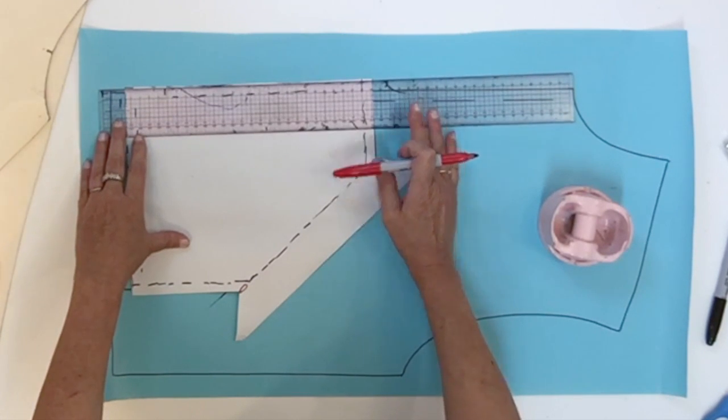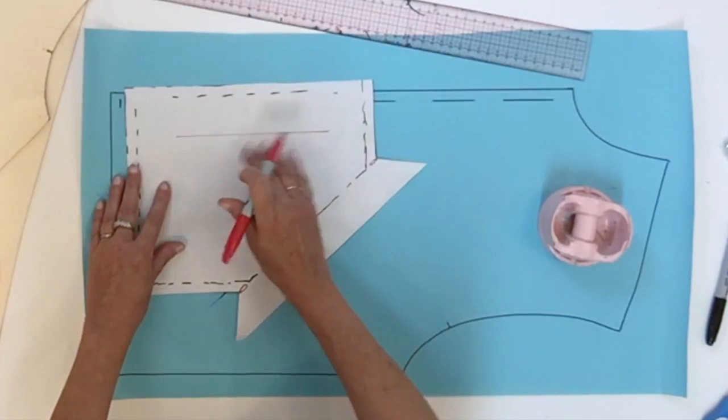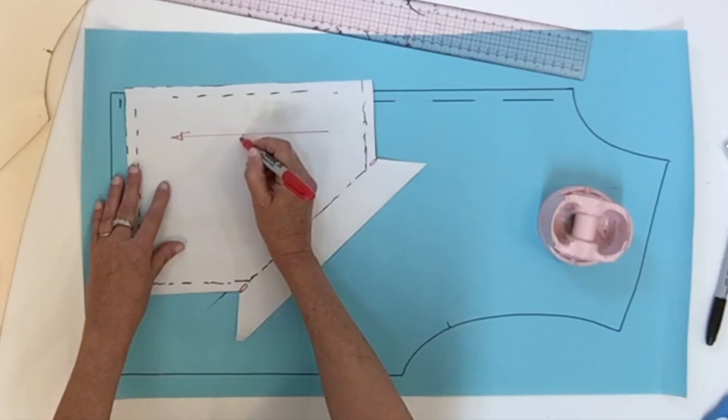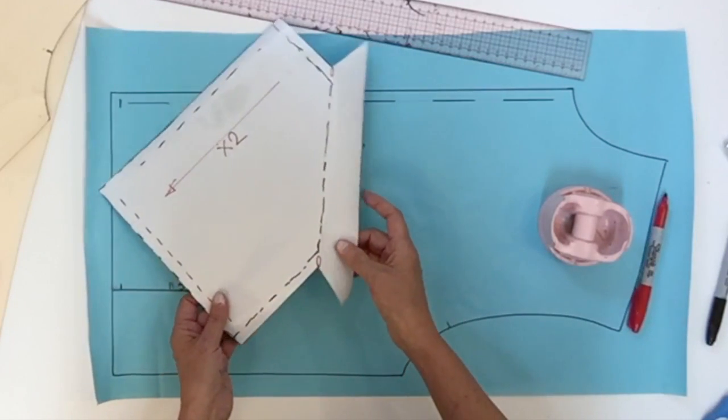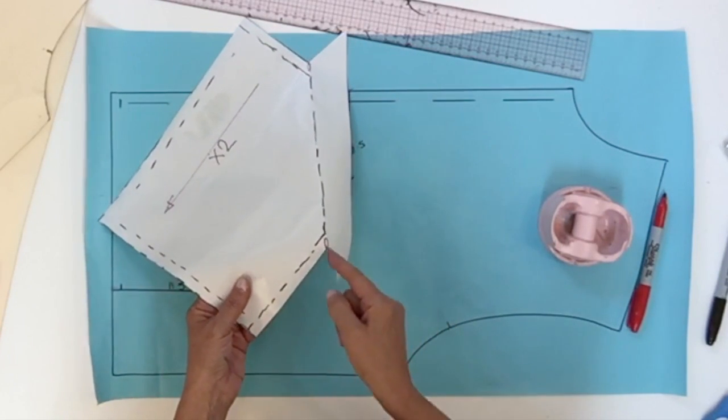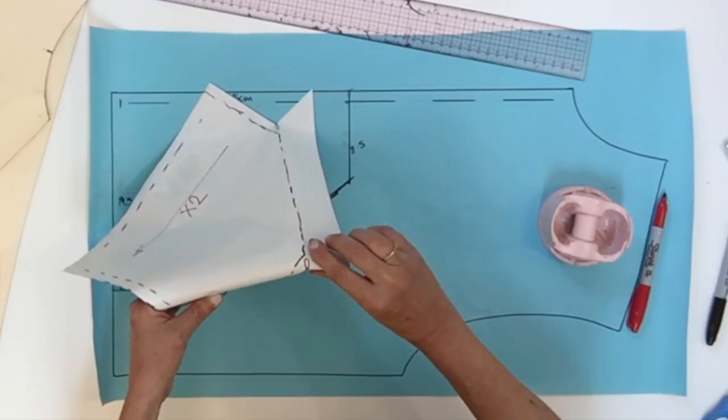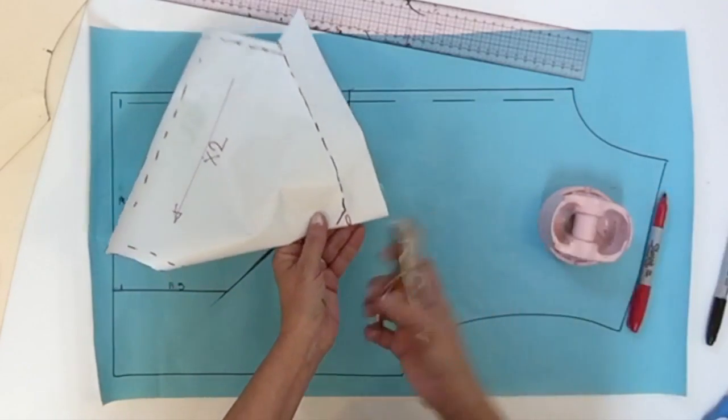Your pocket is now finished. You're only missing the notches, so right at the fold line on both sides, and also the grain line that will be parallel to the front. This piece will be cut two times. If you struggle to cut the notch in the corner like that, you can just fold your pattern and use your notcher just like if it was a straight line.